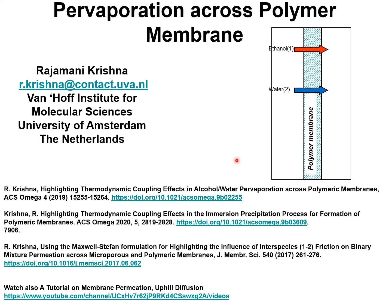Separation of alcohol-water mixtures by pervaporation across polymer membranes is of industrial interest because of the high separation selectivities that are achievable. Alcohol-selective separations are achievable by hydrophobic membranes such as PDMS — that is polydimethylsiloxane.